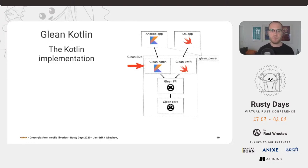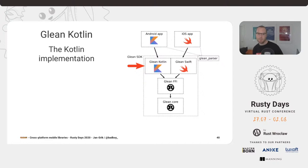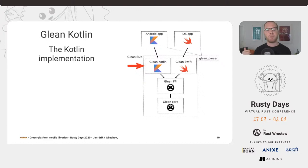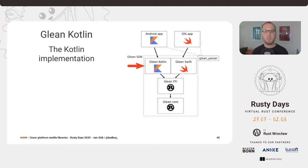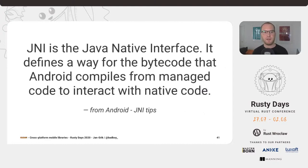Next up, we're going to look at the Glean Kotlin implementation. I explained how the FFI provides a layer on top of Glean core. Now we're looking at the implementation that applications are going to use — specifically the Kotlin implementation, with some comments about the others afterwards. How do you make Kotlin talk with the C API provided by the Glean FFI? The first thing you find if you look that up is JNI — the Java Native Interface. It defines a way for the bytecode that Android compiles from managed code — Kotlin or Java — to interact with native code.